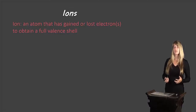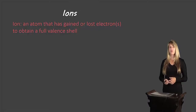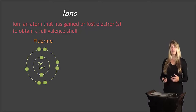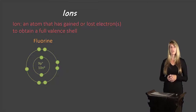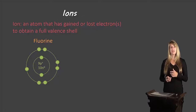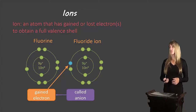Let's take a look at ions more closely. An ion is an atom that has gained or lost electrons to obtain a full valence shell. It may gain or lose one electron, or multiple electrons, depending on the atom. Fluorine has seven electrons in its valence shell — its outermost shell. It could gain one electron to get eight and have a full valence shell, or lose seven electrons. It's much easier to gain one, so fluorine gains one electron and becomes an anion.